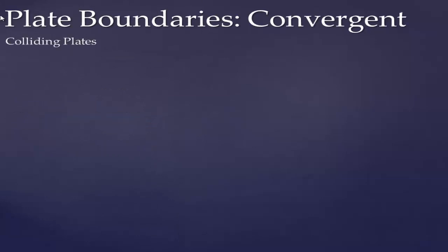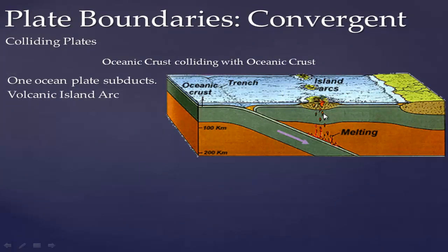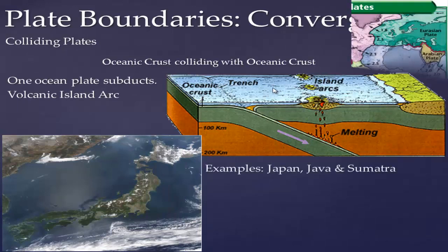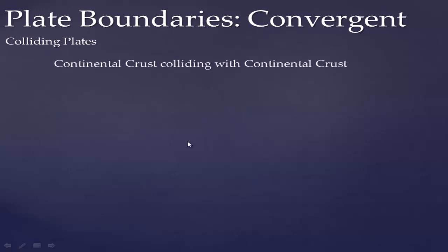In ocean-ocean convergence, one plate still subducts — usually the older, denser one — but because there's no continent above, the magma rises up through ocean and forms what's known as a volcanic island arc. Japan is an excellent example, as are Java and Sumatra. In fact, the 2004 Christmas tsunami resulted from one of the largest earthquakes in recorded history, triggered by movement along a plate boundary where two oceanic plates were colliding.